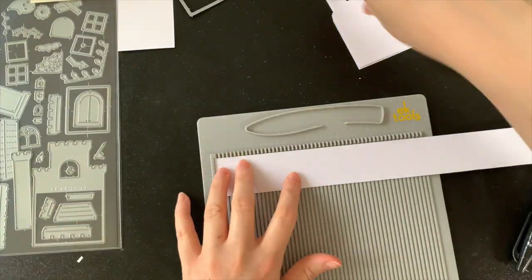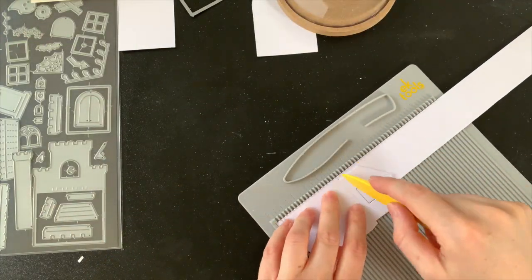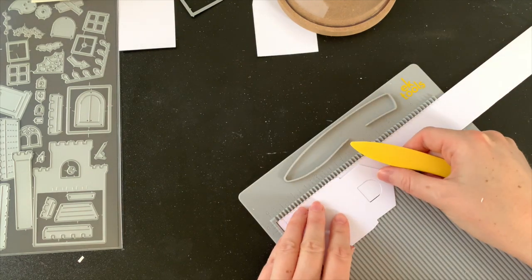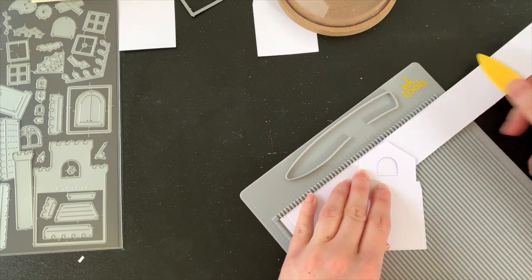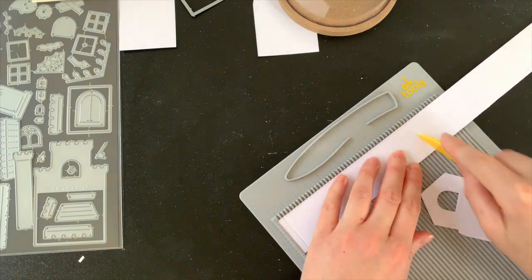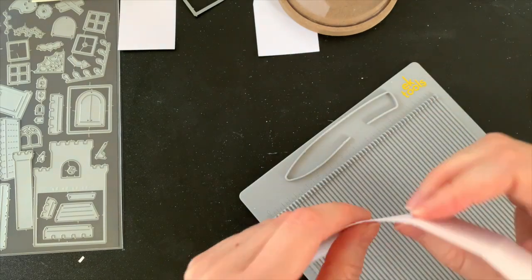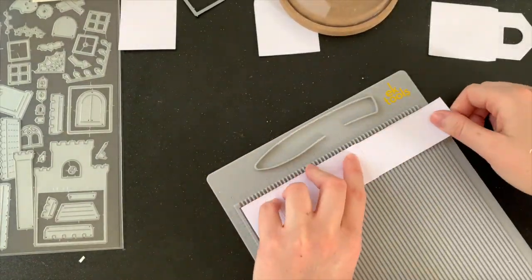So as you may have guessed, it was made using the Builder House die set by Lawn Fawn and it's got a lot of other cute little stamps in there too. So we're getting started with the house first. I've cut a few of the houses out of white cardstock. From here I'm using my scoreboard and I'm just rolling my house along, marking out where all of the corners are.